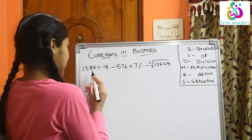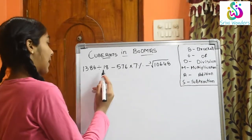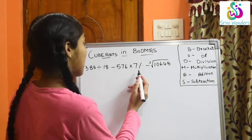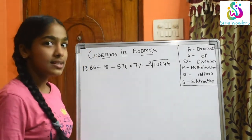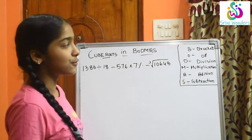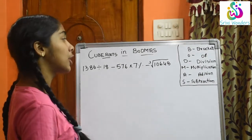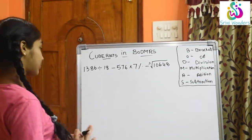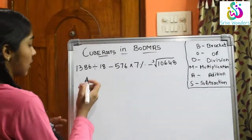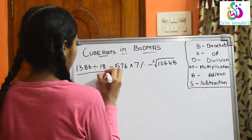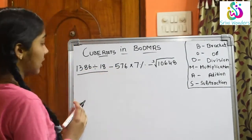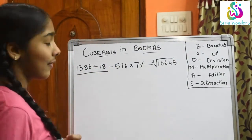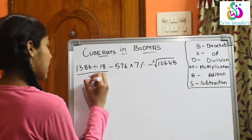See: 1386 divided by 18, minus 576 into 7 percent, minus the cube root of 10648. Now first we will solve 1386 divided by 18. The answer is 77.